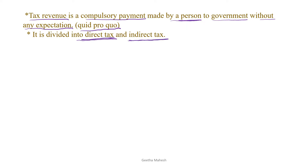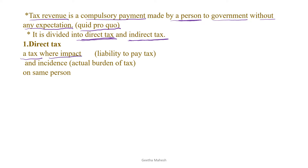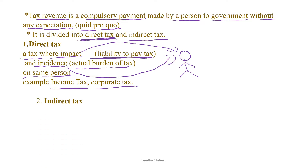Direct tax is a tax where the impact and incidence fall on the same person. Impact means the liability to pay the tax, and incidence means the actual burden of the tax. Under direct tax, the burden of tax cannot be transferred to another person. A good example of direct tax is income tax and corporate tax.